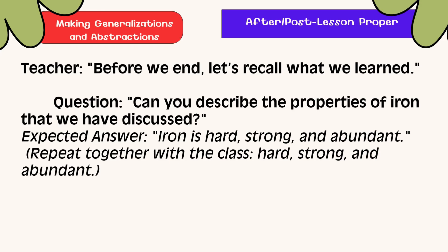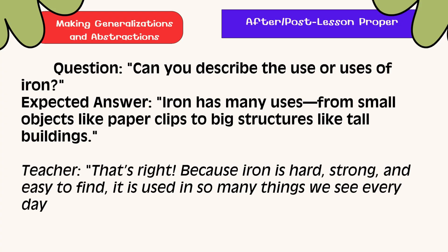Before we end, let's recall what we learned. Can you describe the properties of iron that we have discussed? Iron is hard, strong, and abundant. Can you describe the uses of iron? Iron has many uses, from small objects like paperclips to big structures like tall buildings. Because iron is hard, strong, and easy to find, it is used in so many things we see every day.